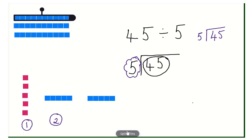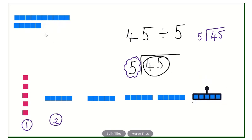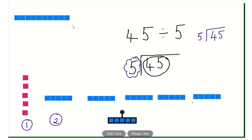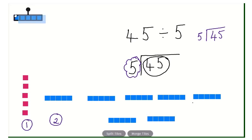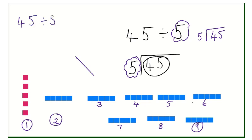Now I'm going to have my third group: five, ten, fifteen. Now twenty — we've got to get to forty-five — twenty-five, thirty, thirty-five, forty, forty-five. So let's see how many groups we've got: one five is five, two fives are ten, three fives are fifteen, four fives are twenty, five fives are twenty-five, six fives are thirty, seven fives are thirty-five, eight fives are forty, nine fives are forty-five.